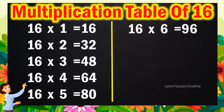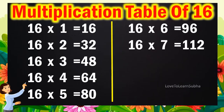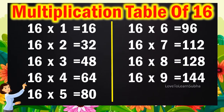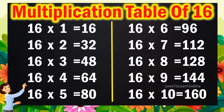16 sixes are 96, 16 sevens are 112, 16 eights are 128, 16 nines are 144, 16 tens are 160.